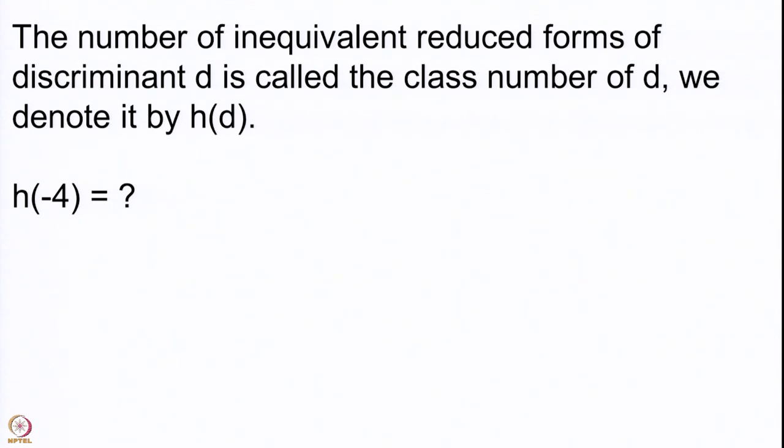Let us do one computation for this number. We know that d has to be negative and it is allowed to be 1 or 0 mod 4. So let us look at the first negative number which is non-zero and is 0 mod 4. That number is minus 4; let us compute h(-4).